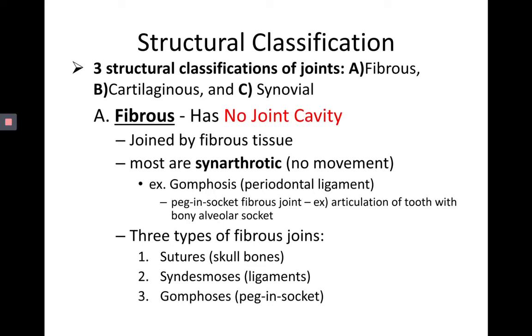There are three types of fibrous joints: sutures, which are between skull bones; syndesmoses, which are ligaments; and the gomphosis — the peg-and-socket joint we just discussed.